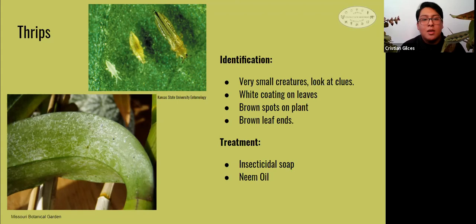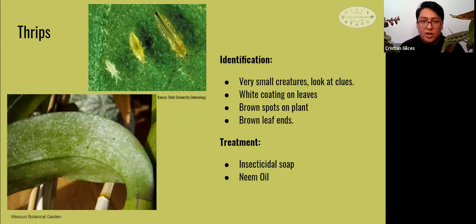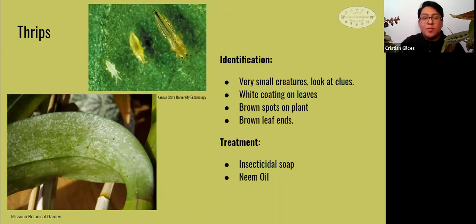Other telltale signs of thrips include browning of leaf ends and brown spots developing on your leaves. Thrips attack your whole plant — leaves are not the only susceptible part; you could see damage on flowers and stems as well. From my experience, thrips are very common on calatheas and should be immediately treated when discovered. Treating thrips is fairly easy: spray the plant with insecticidal soap or neem oil, let it sit for three to five minutes, then wipe your plants thoroughly and be on the lookout for the next five to seven days.